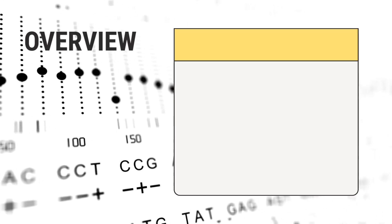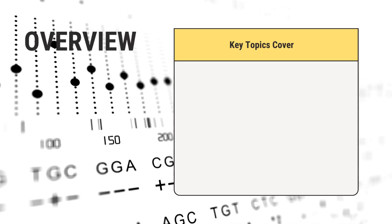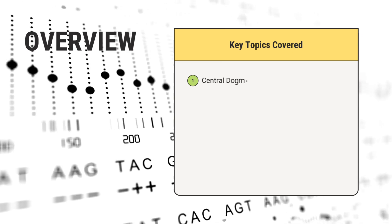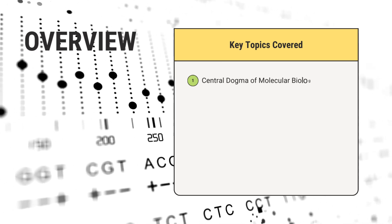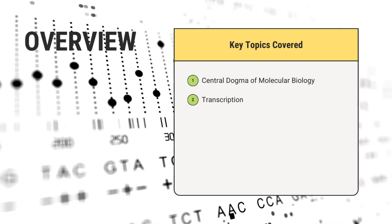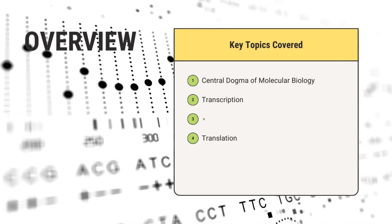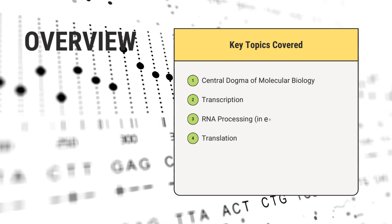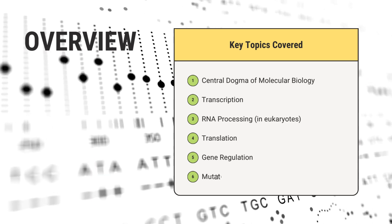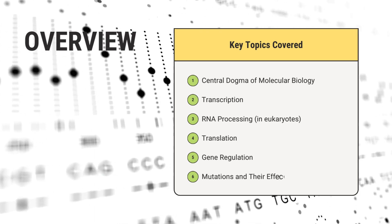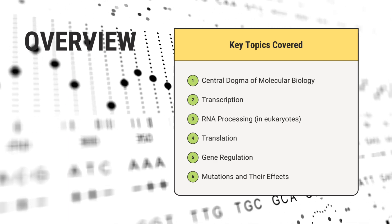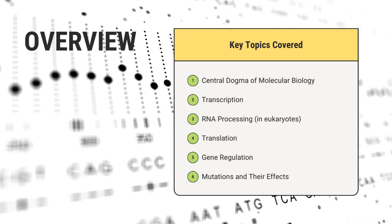To give you an idea of what we will cover today, here's an overview of our topics. We'll start with the central dogma of molecular biology, and then move on to the processes of transcription and translation. We'll also discuss RNA processing in eukaryotes, gene regulation, and the impact of mutations. By the end, you should have a solid understanding of how genetic information translates into the proteins that drive cellular functions.